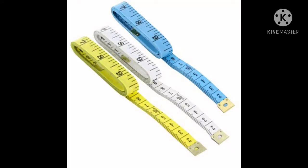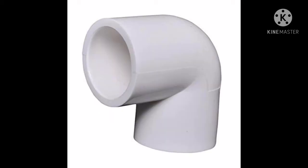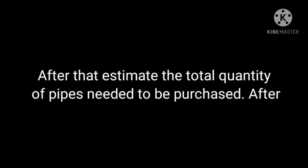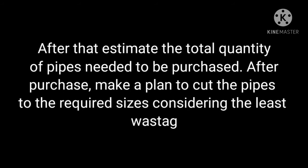With an underground pit, for any such issues the first thing we need to do is take measurements of size, length, and connectors like couplings and elbows. After that, estimate the total quantity required to be purchased. After purchase, make a plan to cut the pipes to required sizes considering the least wastage.